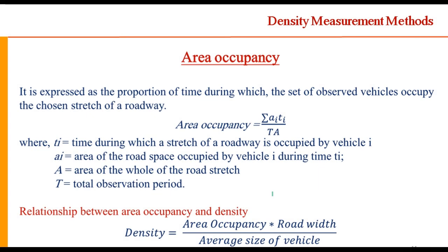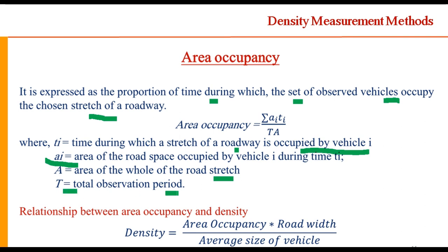In the area occupancy method, area occupancy is expressed as the proportion of time during which observed vehicles occupy a chosen stretch of roadway. You mark an area on the road and find the time t_i during which the stretch is occupied by vehicle i having area A_i, where A is the area of the whole road stretch and T is the total observation period. Density can also be found as area occupancy × road width divided by the average size of vehicle.